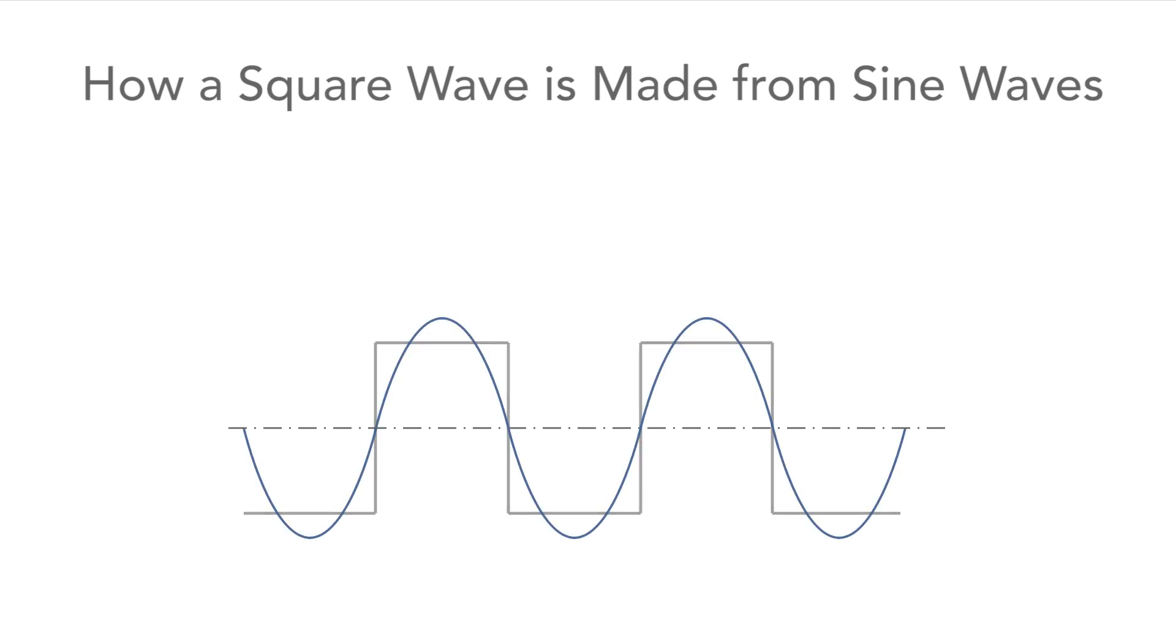By adding additional harmonics at the right level we get nearer to the square wave with the addition of each one.